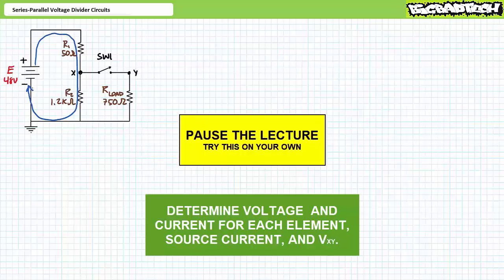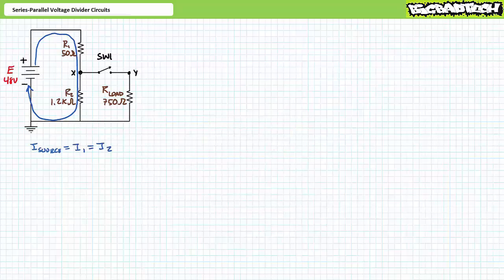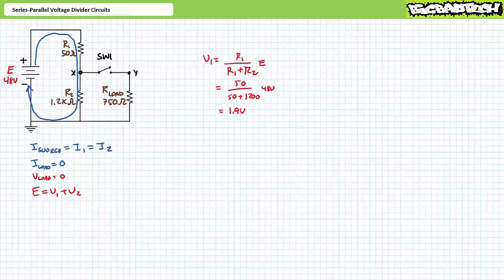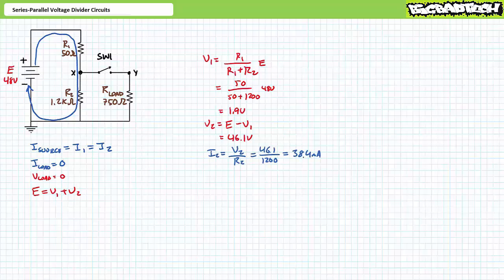If you're tracking, you should have obtained the following values. For this pure series circuit, source current equals I1 which equals I2. No current travels through the load; as such there will be no voltage across the load. A Kirchhoff's voltage law analysis of this circuit suggests that E equals V1 plus V2. The easiest way to solve for these unknown properties is to use the voltage divider rule. V1 is 1.9 volts, and an algebraic manipulation of the KVL equation demonstrates that V2 is the remaining 46.1 volts. An application of Ohm's law demonstrates that I2 is 38.4 milliamps, and since this is a pure series circuit, source current equals I1 equals I2 equals 38.4 milliamps.